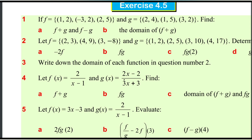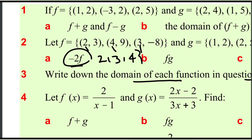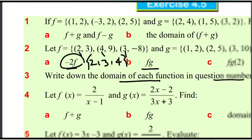Write down the domain of each of the functions in equation number 2. If you want to see this domain, the domain is equal to 1, A is negative to 1. First component is equal to 1. So 1, dollar sign is equal to 1. If it has greater than 3.